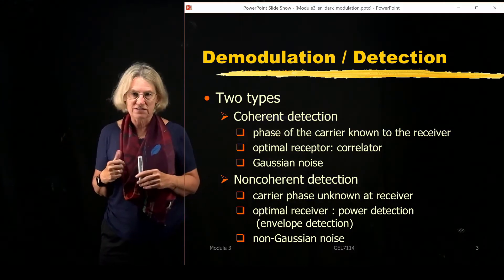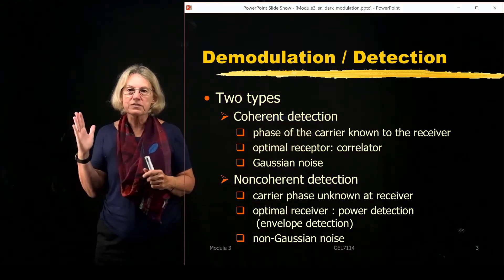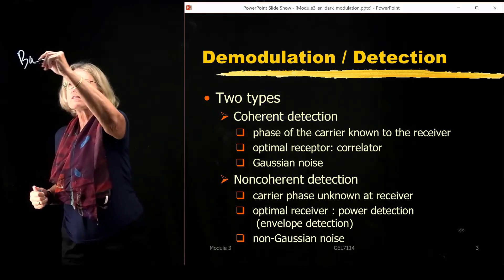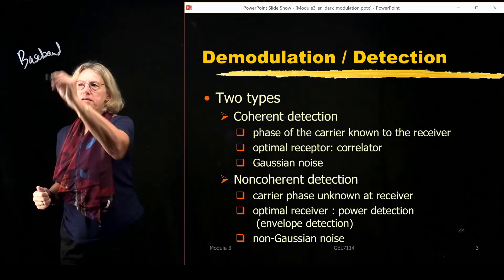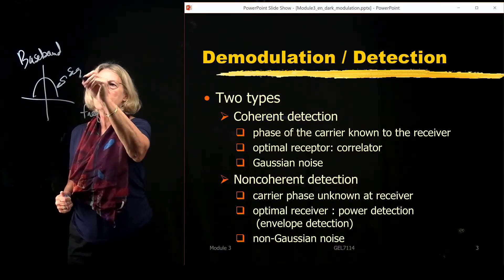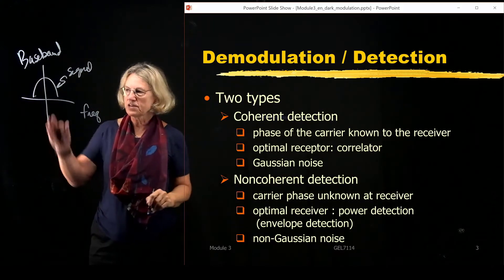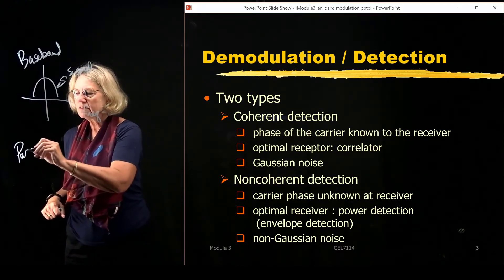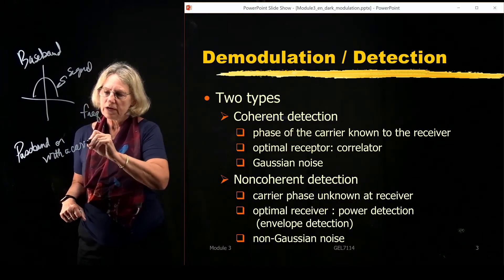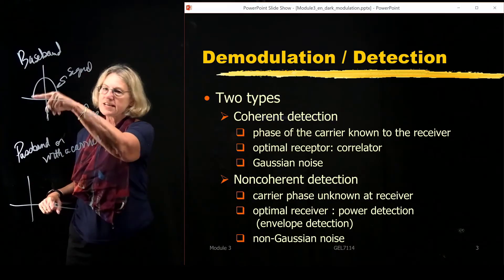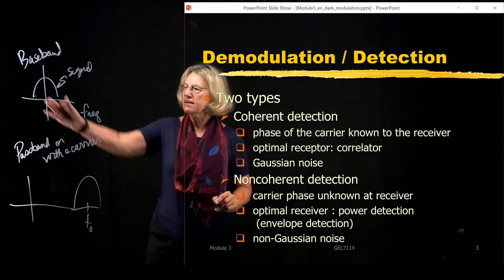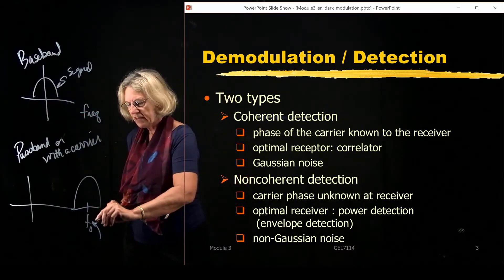Most communications involve the use of a carrier — a frequency that we use to shift the communications signal. One option is baseband signaling, where in the frequency domain the communications signal is centered at frequency equals zero. But in passband, or with a carrier, we shift that same spectrum to some other center frequency — a nominal center frequency that is not DC. We call this the carrier frequency.